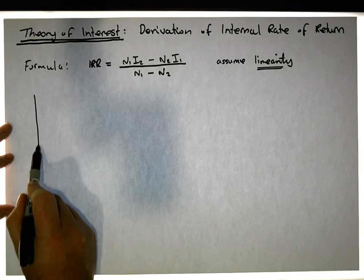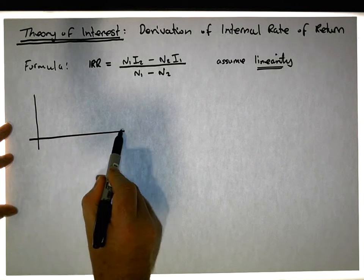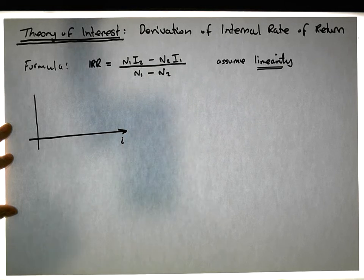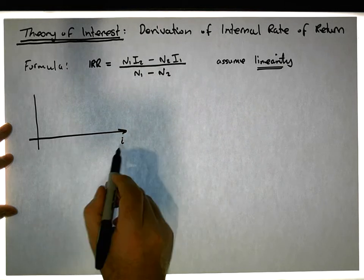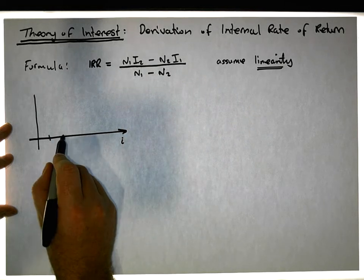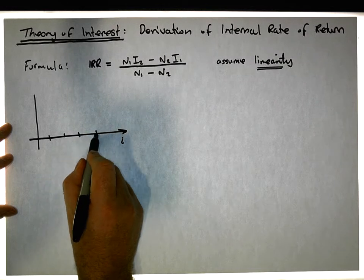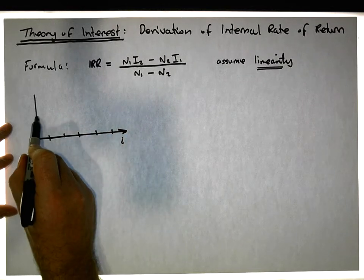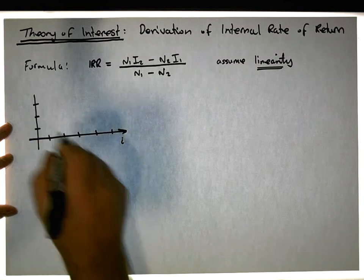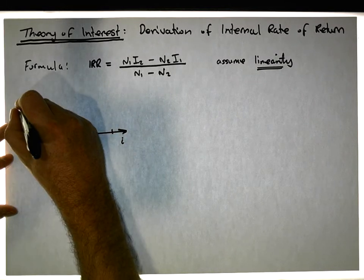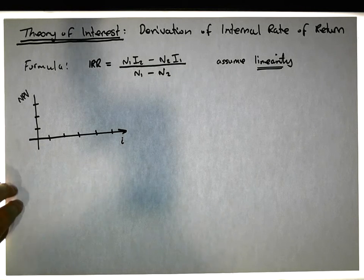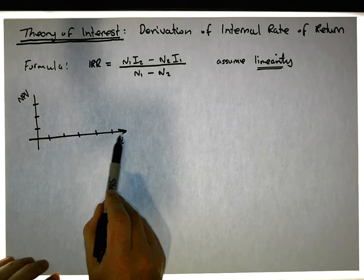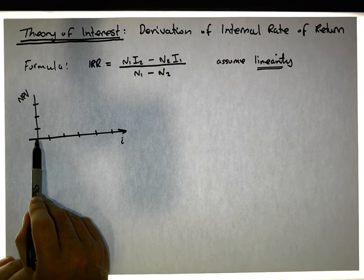Let's set up the graph. The x-axis represents possible interest rates we can choose for a particular project, and with every interest rate we choose, we get an associated net present value. The y-axis represents the net present value, and what we're interested in is the interest rate that will result in a net present value of zero.